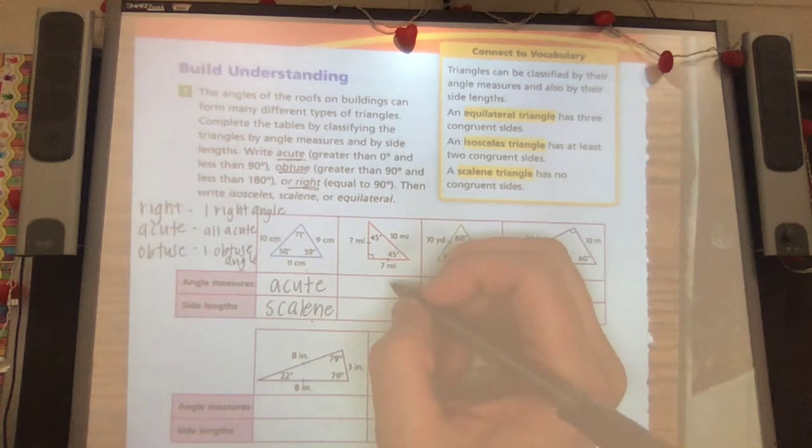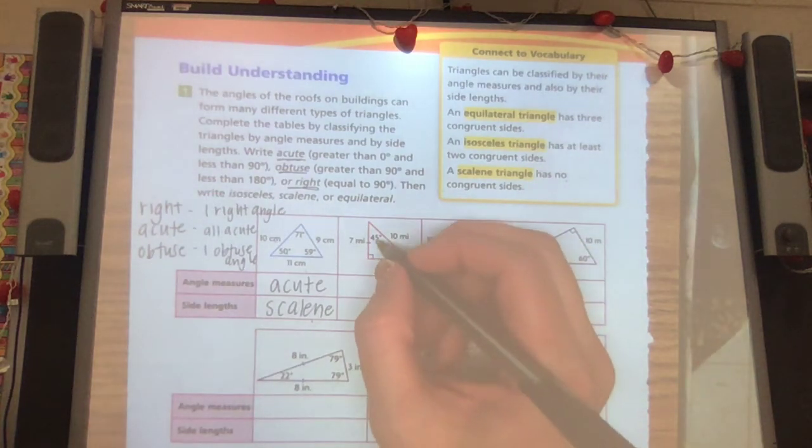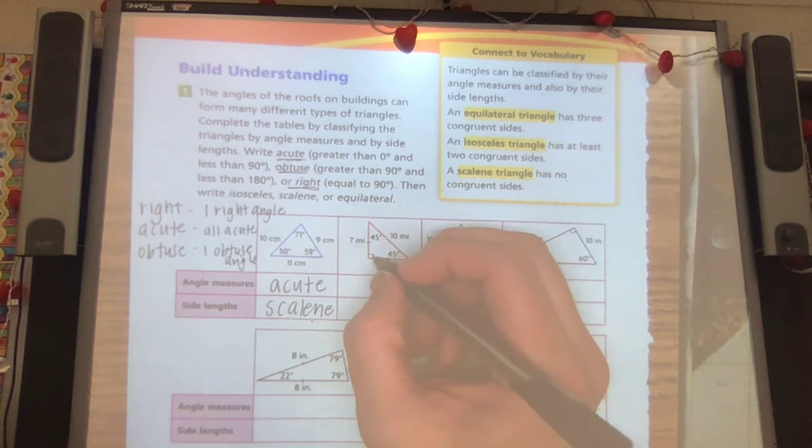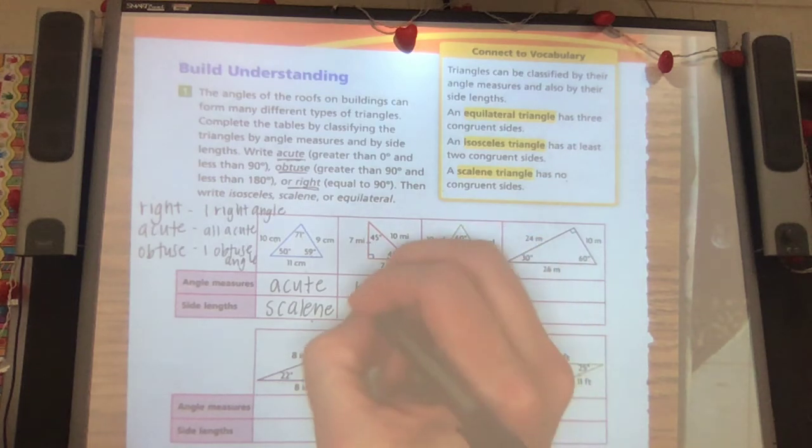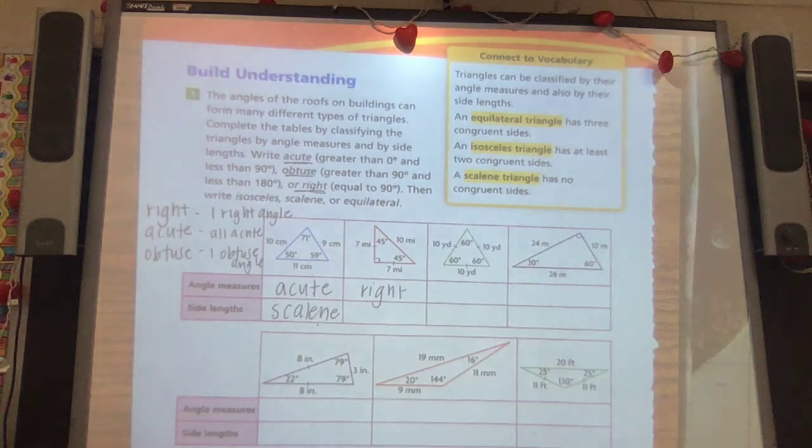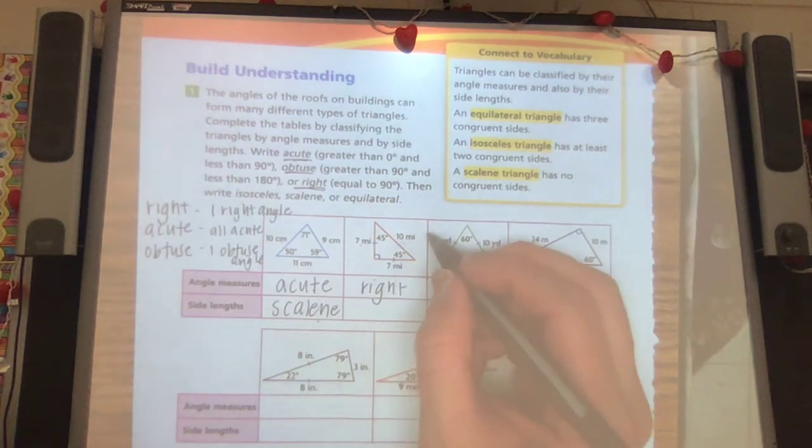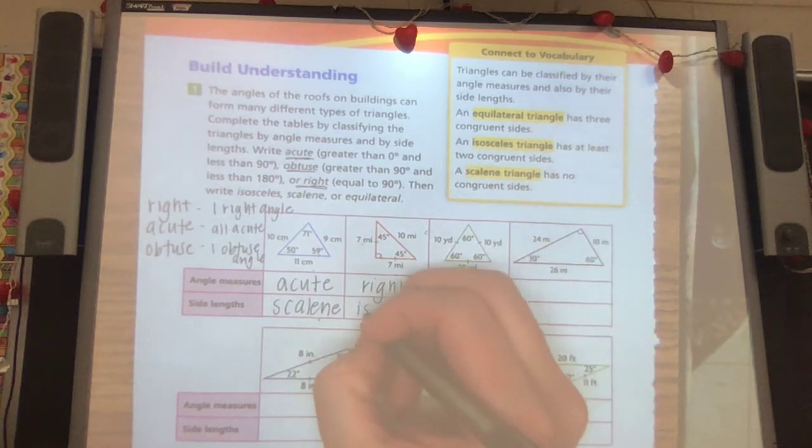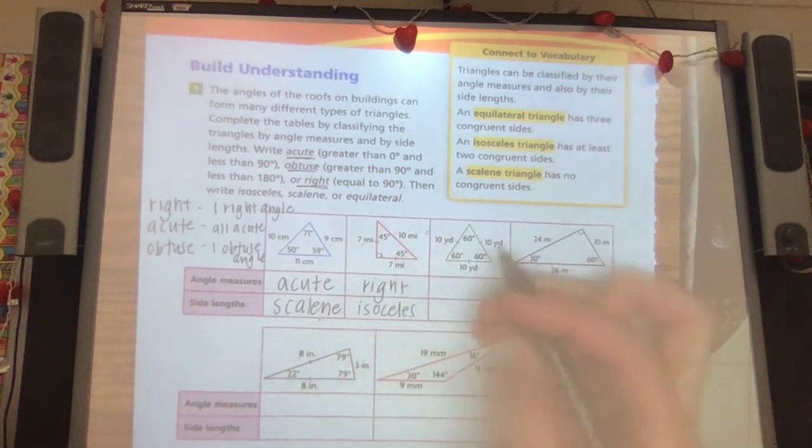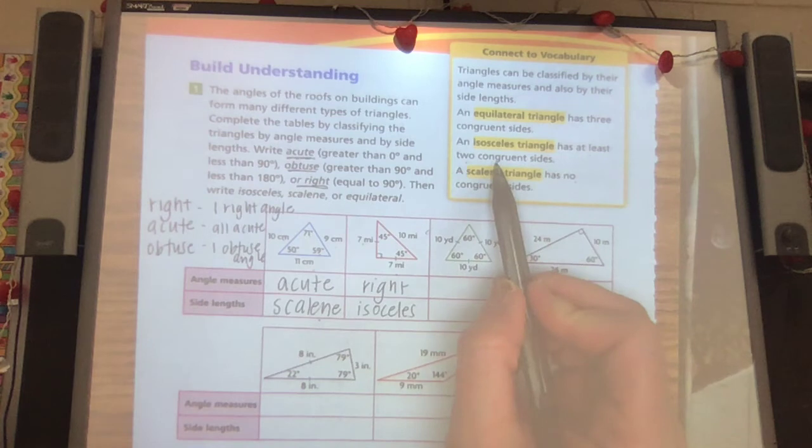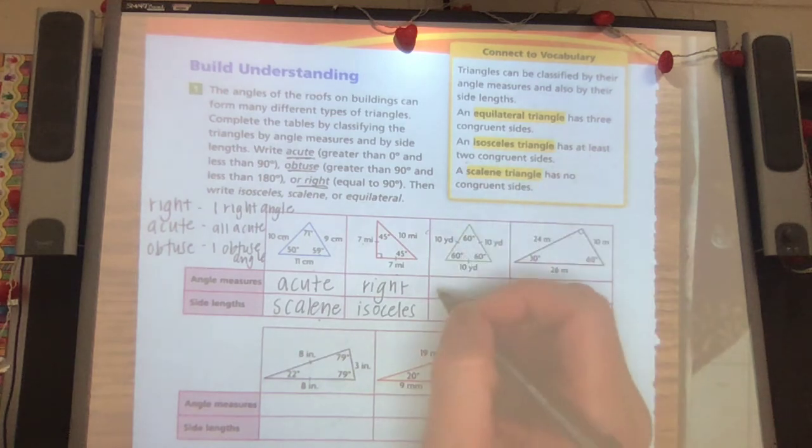Okay. Next one. We have a right angle 45 and 45. So if it has a right angle, it is called a right triangle by its angles. And let's look at the sides. 7, 7, 10. So that means isosceles because it has two congruent sides. All right.